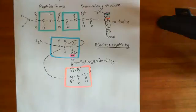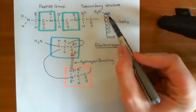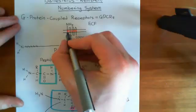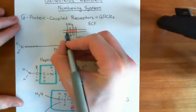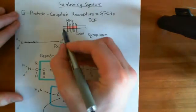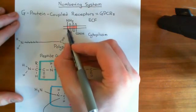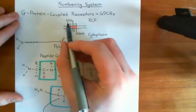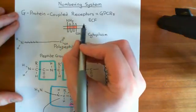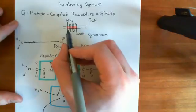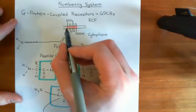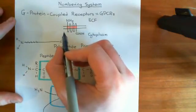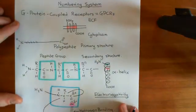We would like to have a way of numbering the residues within the alpha helices of the G-protein coupled receptor. There are these seven membrane-spanning alpha helices, and pretty much they are a constant length — each of these alpha helices will be a certain number of amino acids long, and that number will be conserved between all the different G-protein coupled receptors. So we would like to have a way of numbering the residues within the alpha helix, and the Ballesteros-Weinstein numbering system is a way of doing that.